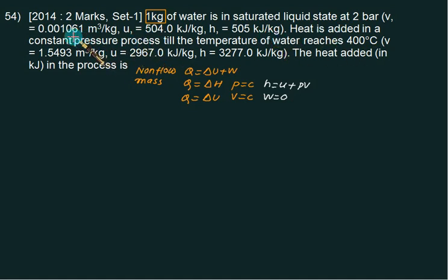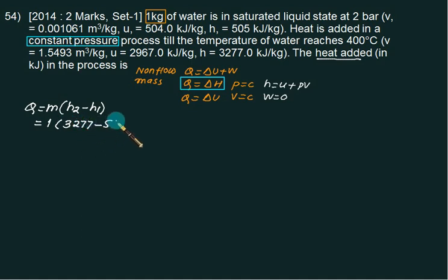The problem says saturated liquid state at 2 bar, with volume, enthalpy, and internal energy given. Heat is added at constant pressure, so constant pressure process is the important term for us. We can use this equation: Q = m(h2 - h1). Heat added, so it will be h2 - h1. This time we have mass = 1, enthalpy h2 given as 3277, and h1 is 505.